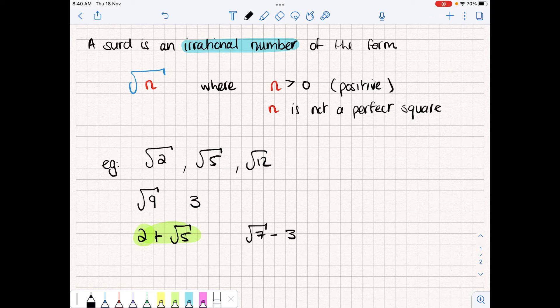Or alternatively, we could have 3 minus the square root of 2 over 5. Now, this part here again could be considered a rational number because it's just 3 over 5. However, the square root of 2 over 5 is not a rational number, and so collectively this is called a surd.